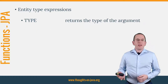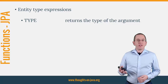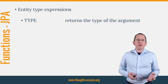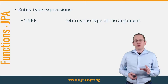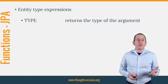The last type of functions supported by JPA that I want to show you is the type expression. It returns the type of a specific argument, which you can use to adapt your query to specific entity types within an inheritance hierarchy.